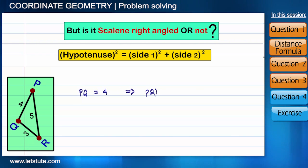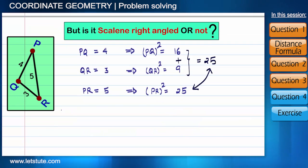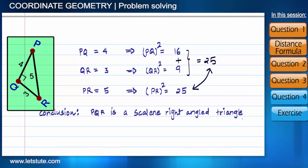So I found that it's a scalene right-angled triangle. See how easy things are—we just need to concentrate a bit and apply a little bit of logic.